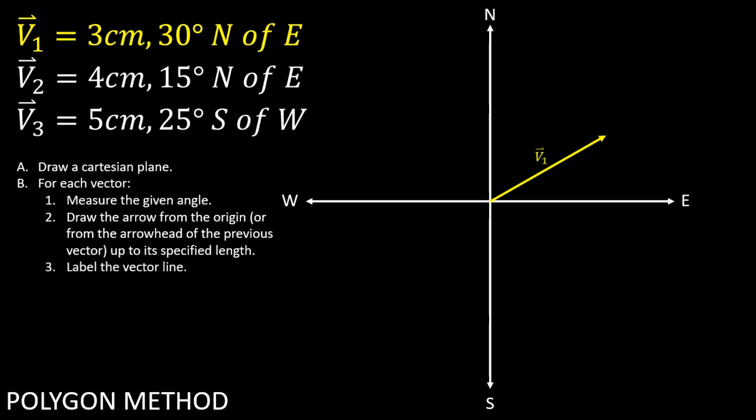Additionally, labeling each vector line is important to avoid confusion. You now have plotted your first vector.